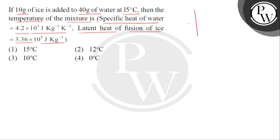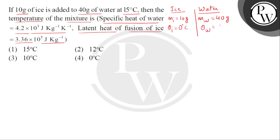We have two objects given. First, we have ice — mass of ice is 10 grams. Second, we have liquid water, which is 40 grams. Ice means the temperature is 0 degrees Celsius, so theta_I = 0°C. Temperature of water is given as 15 degrees Celsius. Specific heat of water is 4.2 × 10³ joule per kg per Kelvin, and latent heat of fusion of ice is 3.36 × 10⁵ joule per kg.